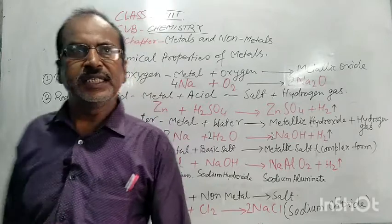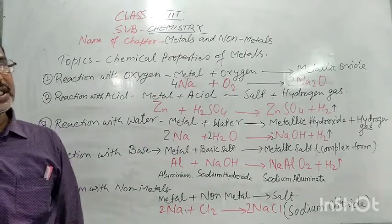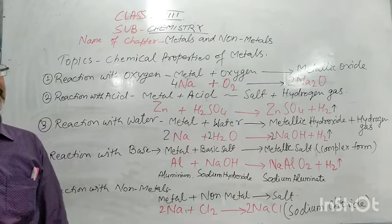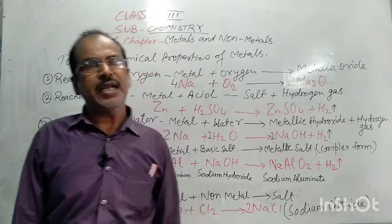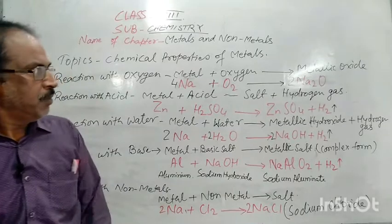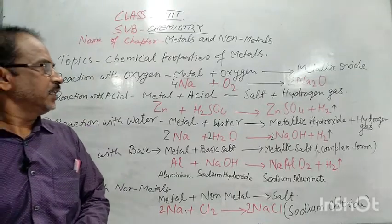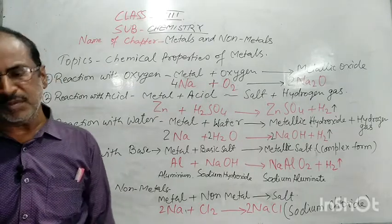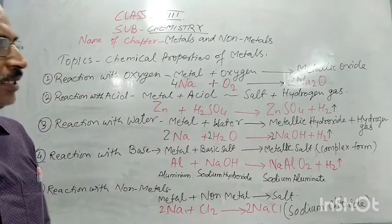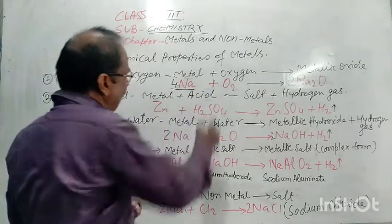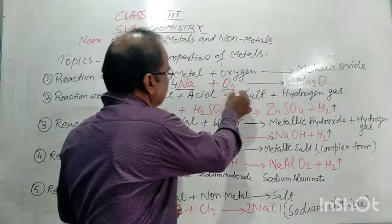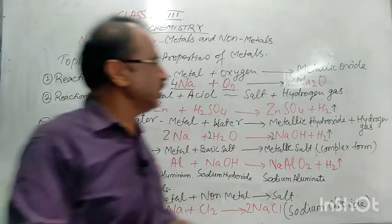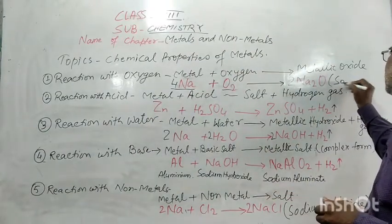The highly reactive metals react readily, as you have put on the board — sodium reaction. When a metal reacts with oxygen, it gives a metallic oxide. For example, sodium reacts with oxygen to form sodium oxide. The symbol of sodium is Na and oxygen is O₂. Therefore, Na + O₂ → Na₂O.